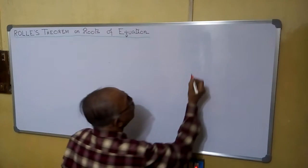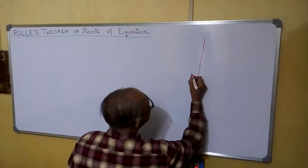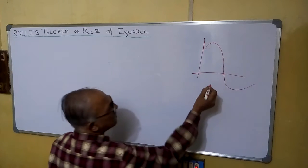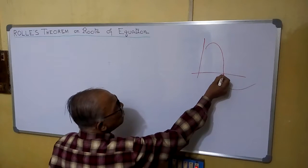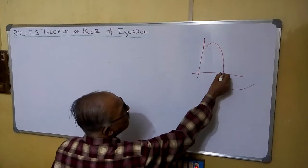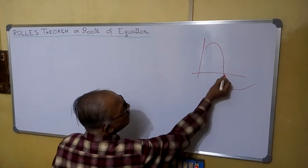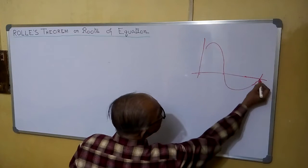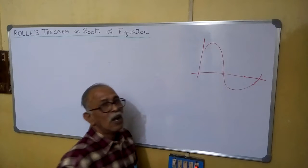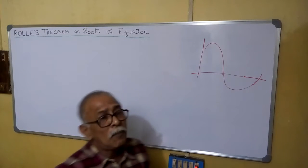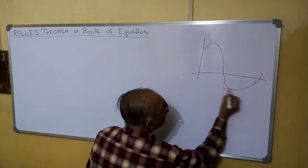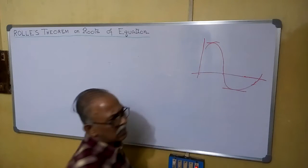Now what is the root? Root means wherever a function is crossing the x-axis, at that point we say y = 0. That value of x is known as a root. And what is the root of f'(x)? f'(x) = 0 when the tangent to the curve is parallel to the x-axis.